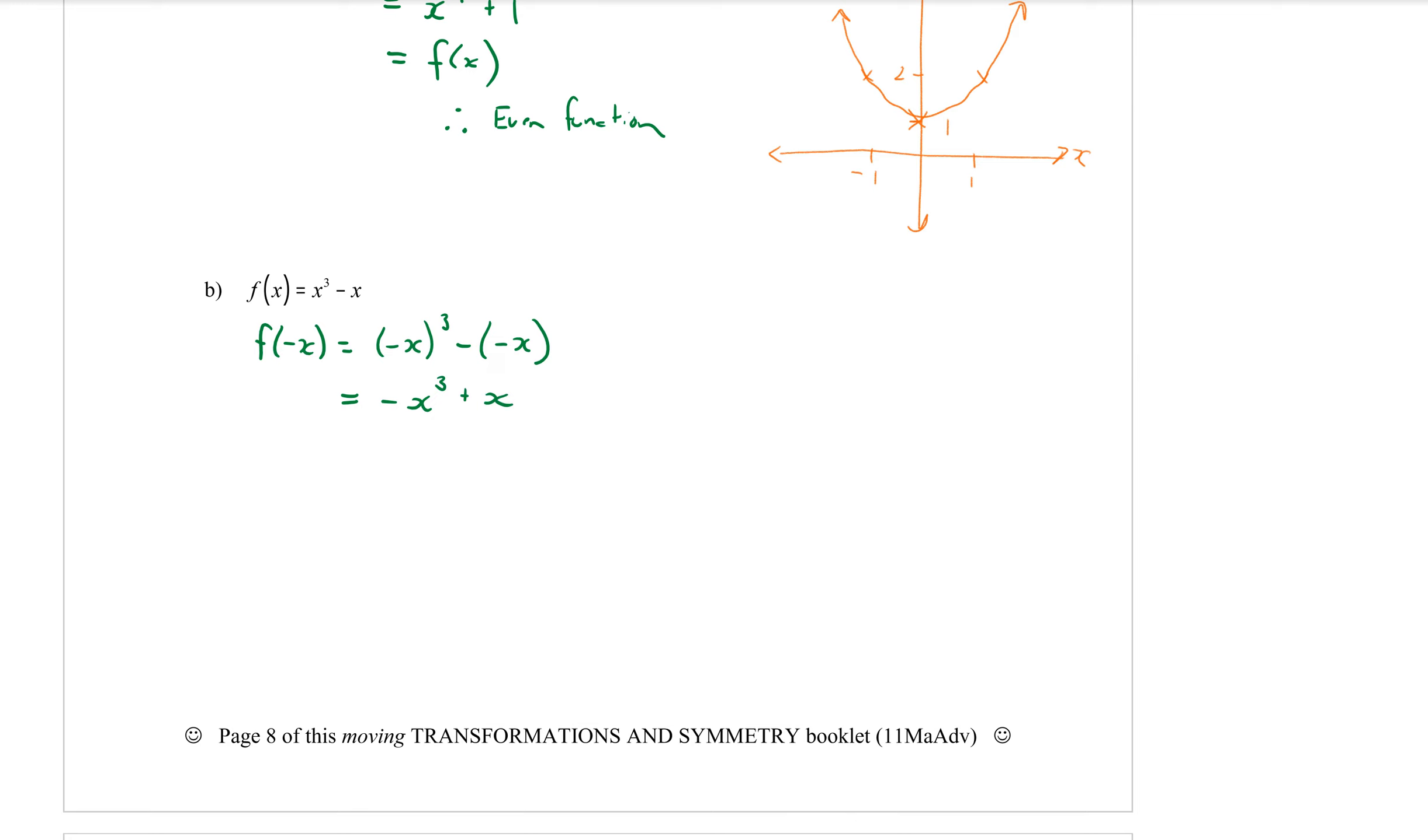A minus and a minus becomes a plus x. Now is that the same as the original function? No it is not so it's not an even function. So the next thing we do if it's not the same is we factorize out a negative sign. That would give me x cubed minus x. If what is in the brackets is the same as the original function which it is, we have negative f of x which is the definition of an odd function.